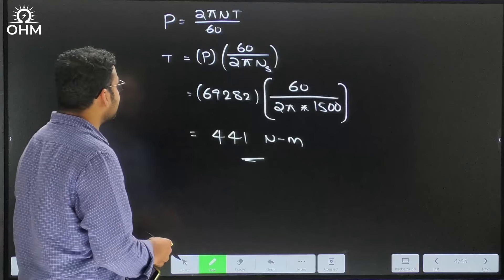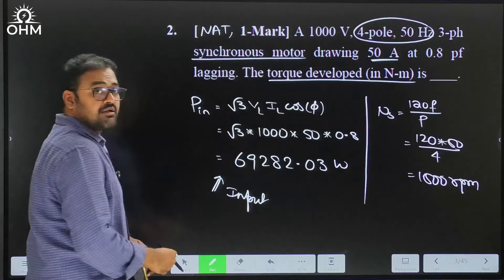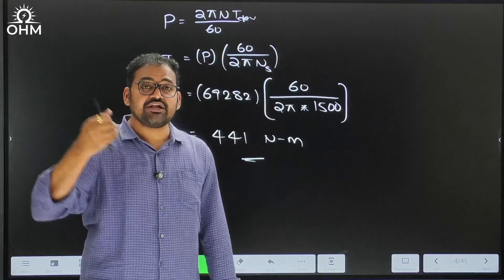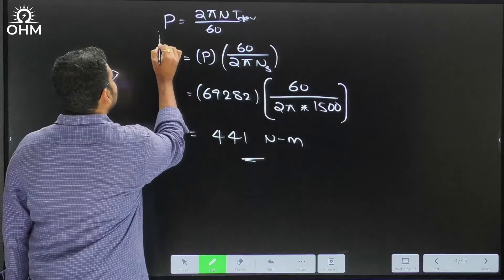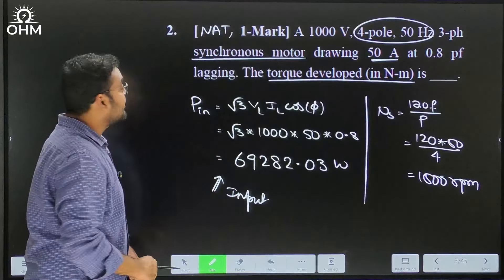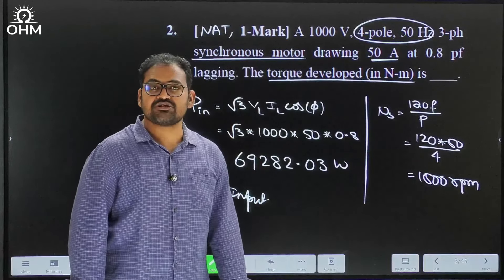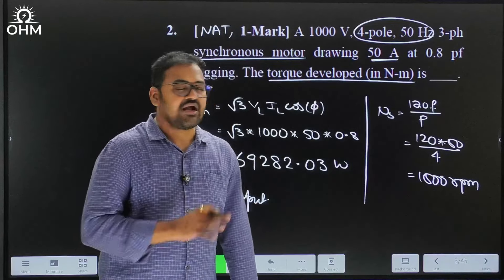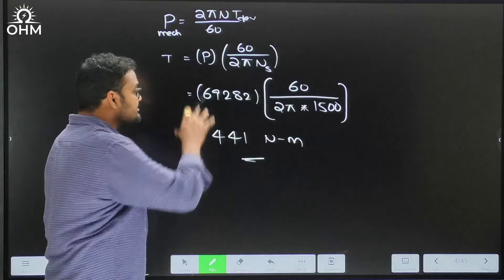The power calculated is the input electrical power drawn by the motor. When asked for developed torque, we should use the mechanical power developed. But since there is no information about power losses, we assume a lossless machine and input power equals output power. If, say, 2000 watts of losses existed, we would use 69,282 minus 2000 as the mechanical power. Since no loss information is given, we neglect losses here.